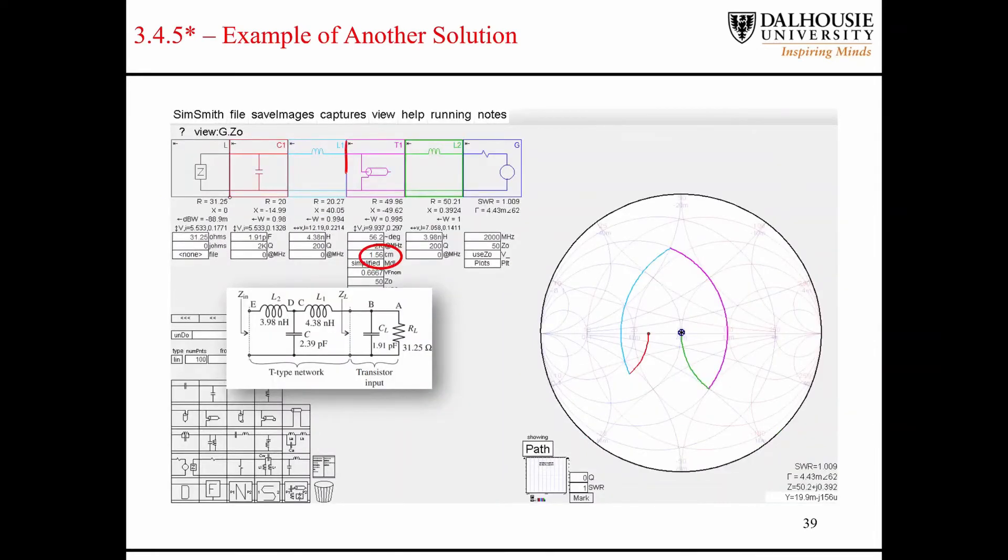Here you can see I replaced the capacitor with a transmission line, with an open-circuited transmission line. You can see here at this end of the transmission line it's open-circuited. We could have taken that approach as well with a short circuit, but we would have had to rotate an extra quarter of a wavelength. You can see I replaced the 2.39 picofarad capacitor with a transmission line, and it got us to the same point in the center of the Smith chart, which is great.